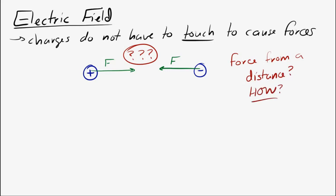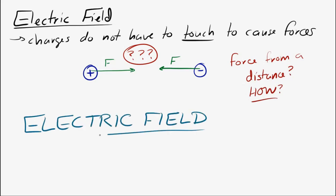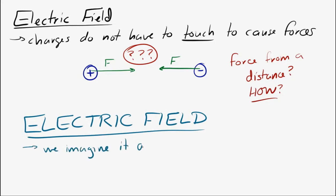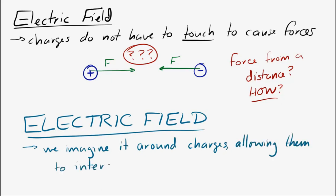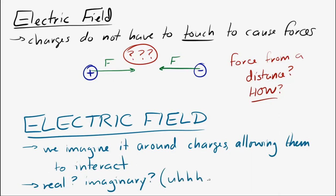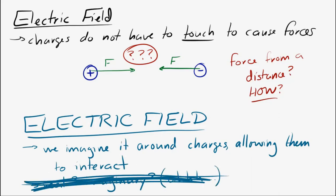The way that we think about this happening is through something called the electric field. The electric field is something that we imagine around these charges, and it's how the charges interact with each other. You might ask: is this field real? Is it imaginary? That's a really good question, and the answer is kind of both — it's kind of real, it's kind of imaginary, depends on how you look at it. The thing we're going to focus on is that the electric field works.